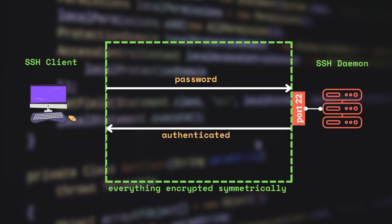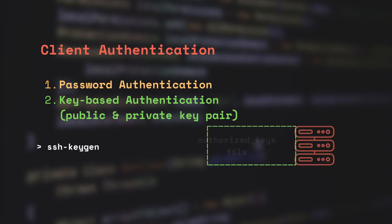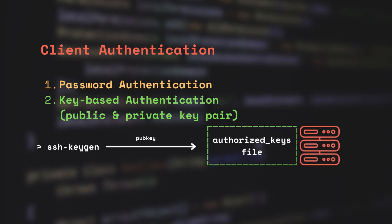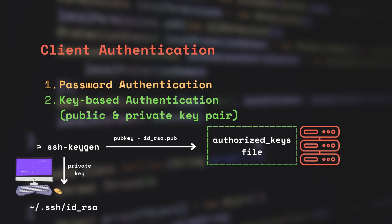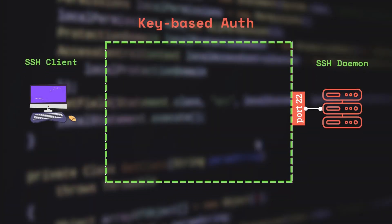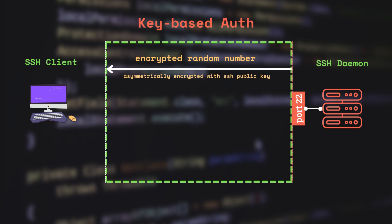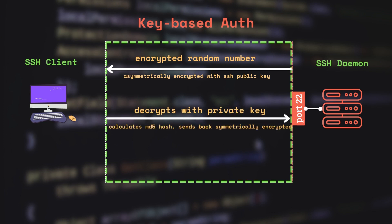The client generates the key pair using the ssh-keygen command, then uploads the public key to the server where it gets stored in the authorized_keys file, while the client keeps the private key. The default location of these keys will be the .ssh folder in the user's home folder. To authenticate the client, the server encrypts a random number using the client's public key and sends it back to the client. If the client holds the private key, it will be able to decrypt the number. Then it calculates the MD5 hash of that number and sends it back symmetrically encrypted.